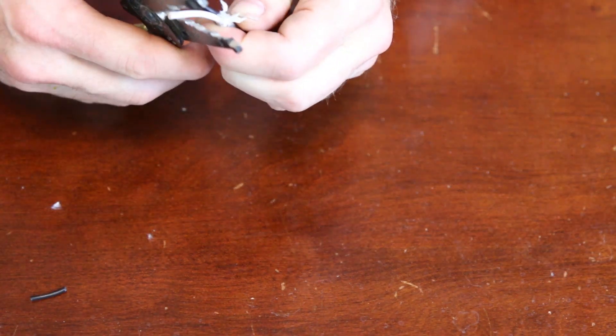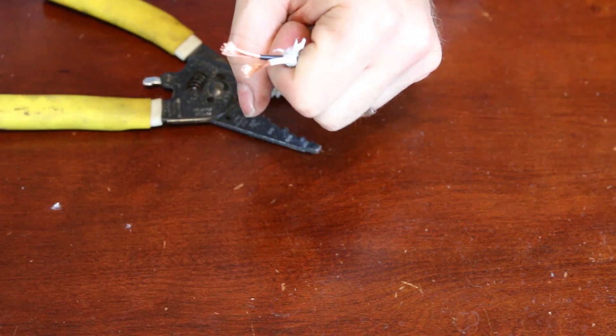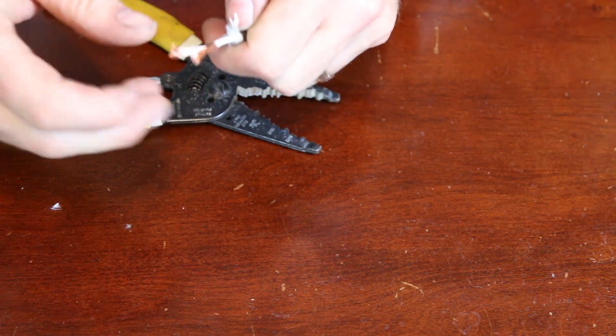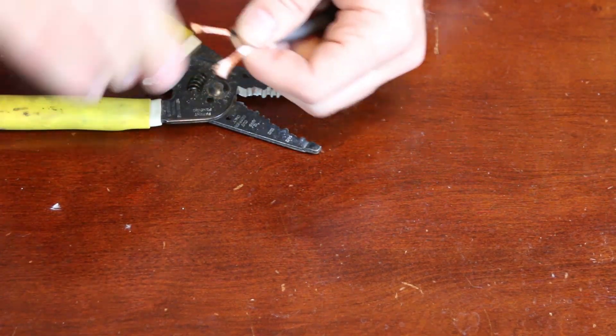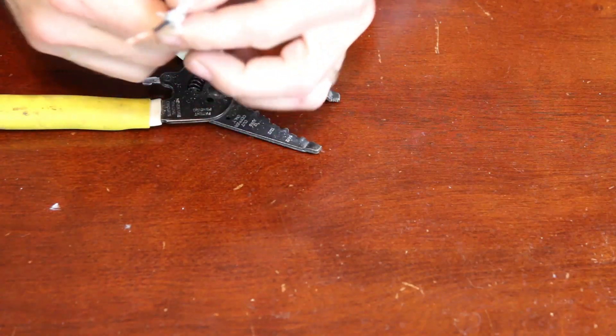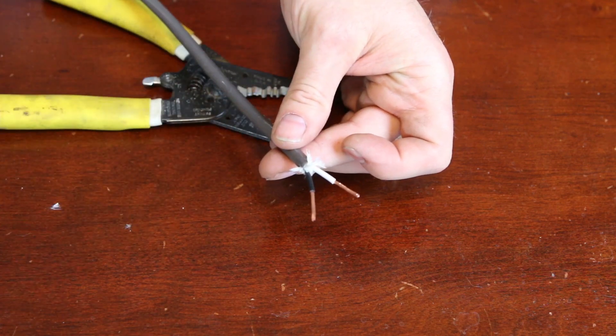And let's do the other one. And pull. How come one is lighter than the other? Well, one is a common, and the other one is hot. And if it had a ground, it would be green. But this one doesn't have a green wire, so we don't have to worry about that.